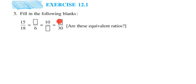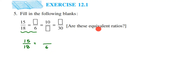For the first blank, we have 15 by 18 and here we have 6 in the denominator with the numerator blank. Comparing the denominators, we have 18 and we got 6, so the number has been reduced. There are two ways to find equivalent fractions: multiplying and dividing. Since 6 is smaller than 18, we cannot multiply to get 6, which means we are dividing. When dividing, you must divide both numerator and denominator by the same number.